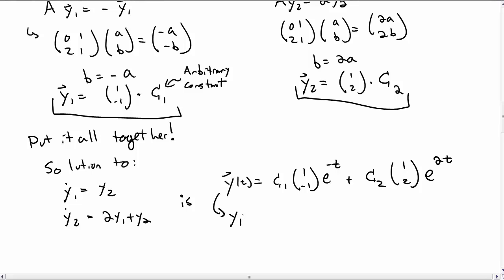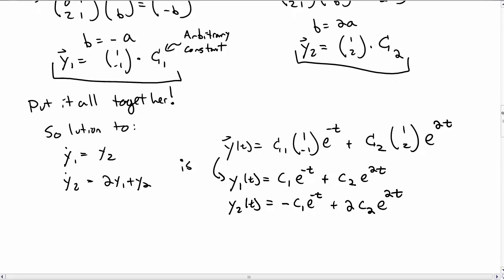It might make more sense to write this out in terms of its components for y1 of t, which is c1 e to the minus t plus c2 e to the 2t, and y2 of t, which is minus c1 e to the minus t plus 2c2 e to the 2t. That looks more like what we expect for a solution to be.